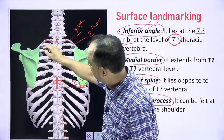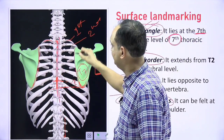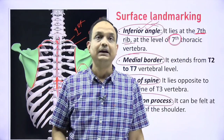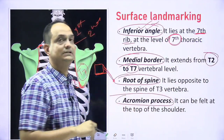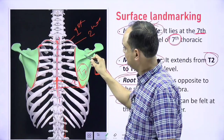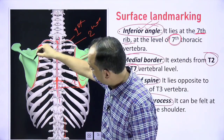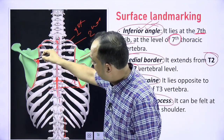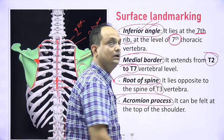The second landmark is the medial border of the scapula. This medial border is parallel to the vertebral column, which is why it is also known as the vertebral border of the scapula. This border extends from the 2nd rib to the 7th rib, corresponding vertebrally from the 2nd to the 7th thoracic vertebra. The next landmark is the root of the spine — the medial part of the spinous process of the scapula, represented by a triangular area, which lies against T3 or the 3rd thoracic vertebra.